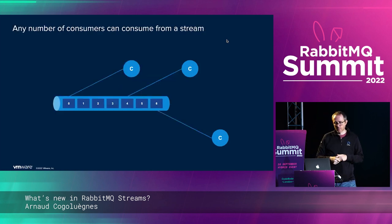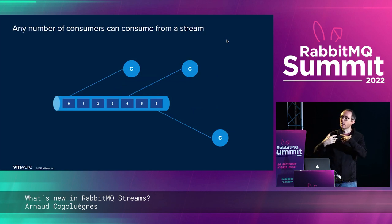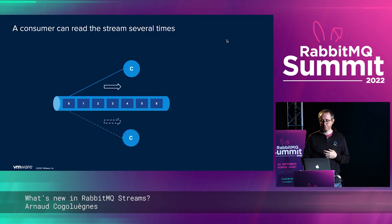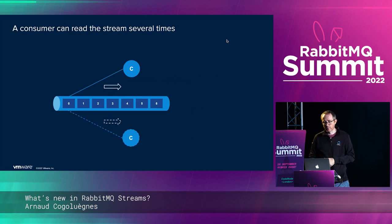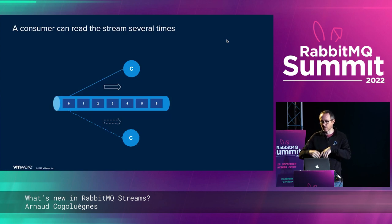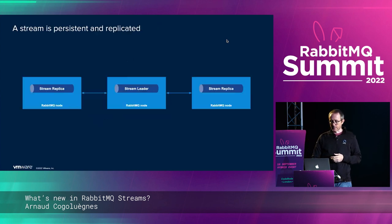With a stream you just have your messages one after the other like a big array, and you can plug your consumers anywhere — at the beginning, in the middle, or at the end. Any number of consumers can consume from a stream and they are not competing, and we don't remove messages. You can imagine the same application reading the same stream, triggered one day to do all its processing, then the day after restarting from the beginning with additional data to recompute its views.